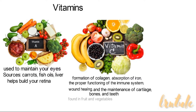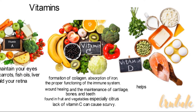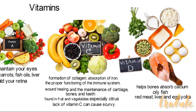Vitamin C is found in fruits and vegetables, especially citrus fruits, and if you don't have enough vitamin C it can cause scurvy. Vitamin D helps the bones to absorb calcium, and you can get it from oily fish such as salmon, sardines, herrings, and mackerels, red meat, liver, and egg yolks. It can also be made in your skin when you're exposed to sunlight.